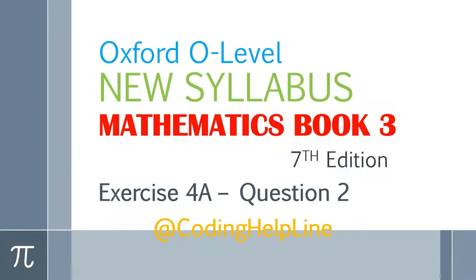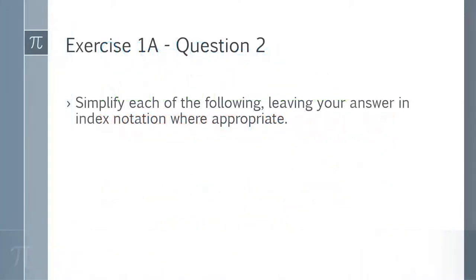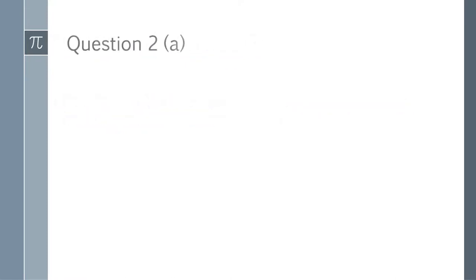This is question 2 of exercise 4a from the mathematics book 3, new syllabus. Question 2: simplify each of the following, leaving your answer in index notation where appropriate. Question 2a: 5^8 divided by 5^5.